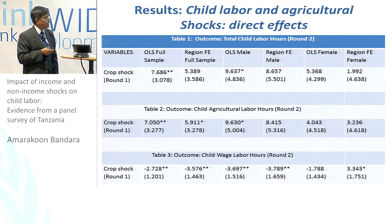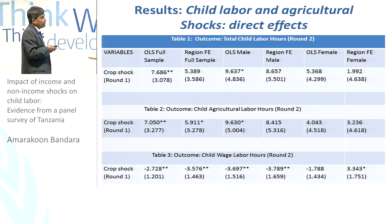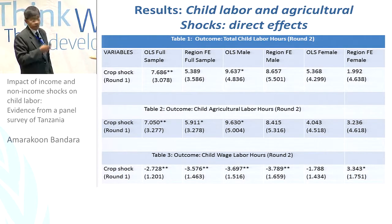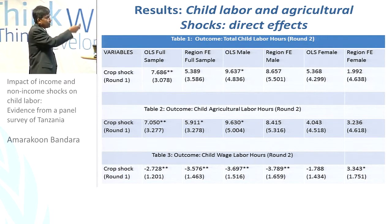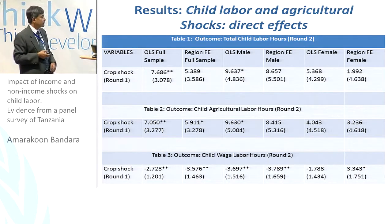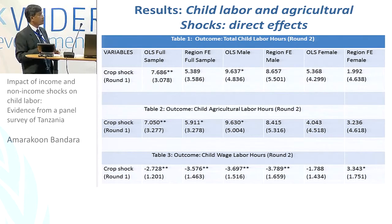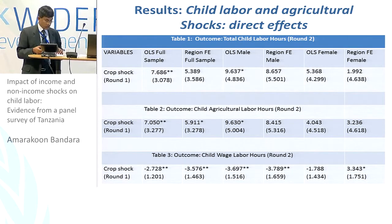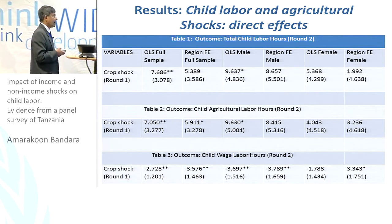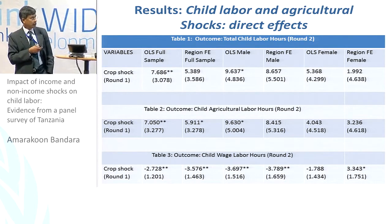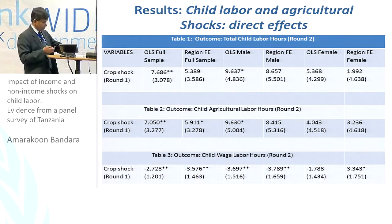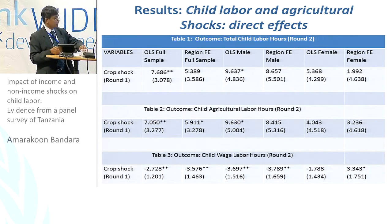The second outcome is child agriculture labor hours. Crop shocks increase child labor in the full sample as well as in the male sample, quite similar to the previous finding. The percentage impact is very high, especially in the agriculture sector — for boys, it is about 42% relative to the sample average. For child wage labor hours, the impact is somewhat significant in both boys and girls, but the magnitude is not as high as in the other two categories.